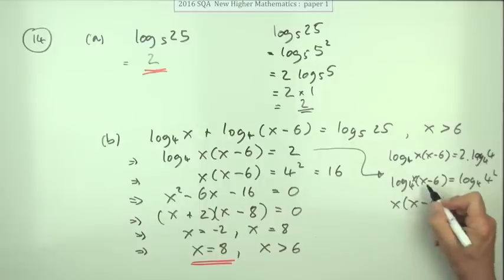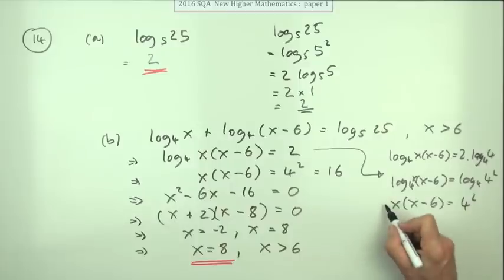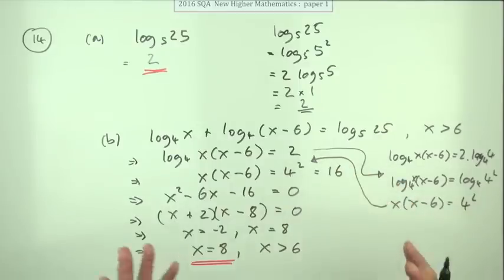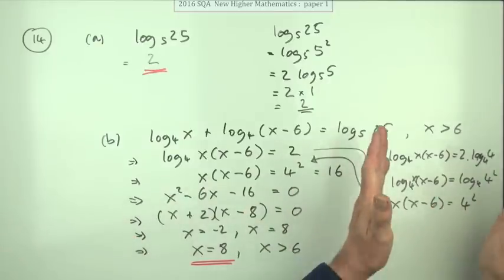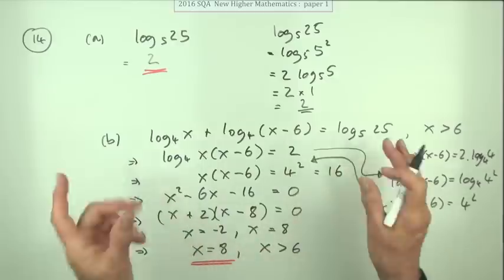And you arrive at x times x minus 6 is 4 squared, taking you back to here.